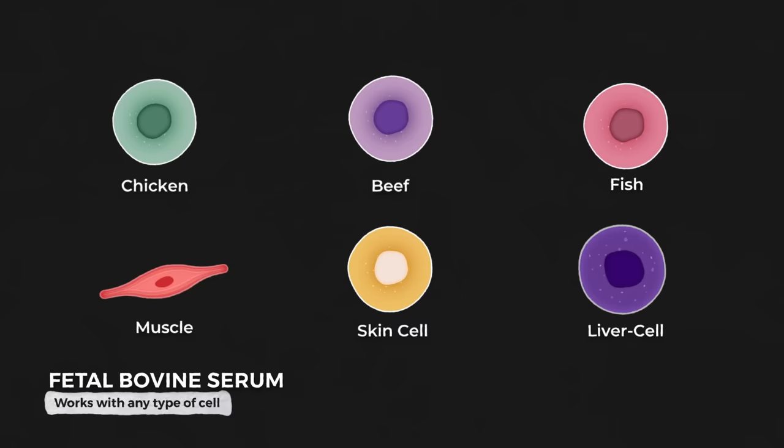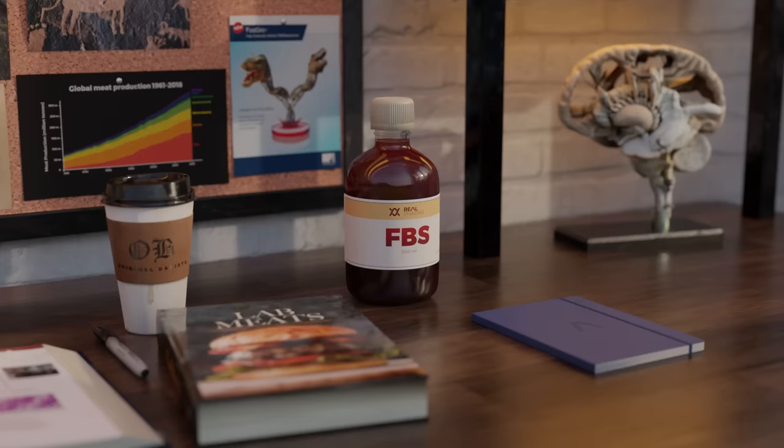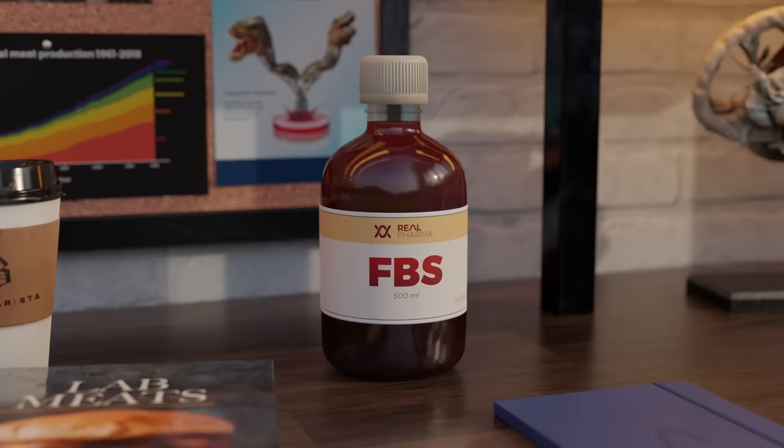When added to any type of cell, that cell will start to replicate and grow, whether it's chicken, beef, fish, or mussels, skin, or liver cells. Other serums do exist, but none are so versatile. As of now, FBS is the essential ingredient to lab-grown meat. An ingredient that completely defeats the purpose of artificial meat. In fact, it's probably even worse than the traditional slaughterhouse.